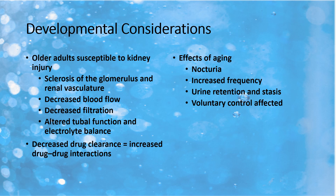Older adults also have less thirst, so they get dehydrated more easily, which increases sodium levels in the blood, making the kidneys work harder to excrete the extra sodium. On top of this, older people usually have more medical problems, meaning they take more medications. The kidneys help excrete metabolized medications, but some medications like ibuprofen and certain antibiotics are hard for the kidneys to excrete and can cause kidney damage. If the kidneys can't excrete medications effectively, those medications increase their levels in the blood, causing drug interactions and toxicity, which then causes more kidney damage.